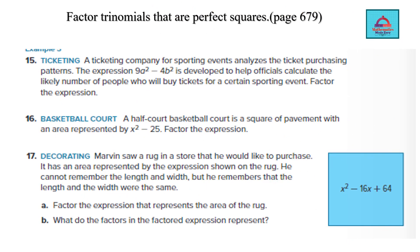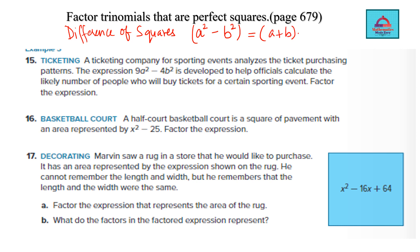Now questions from page 679, with the learning objective of factoring trinomials that are perfect squares. We use the difference of squares identity: a² − b² = (a + b)(a − b). For the given expression, 9a² is the perfect square of 3a and 4b² is the perfect square of 2b, so we can apply the difference of squares.